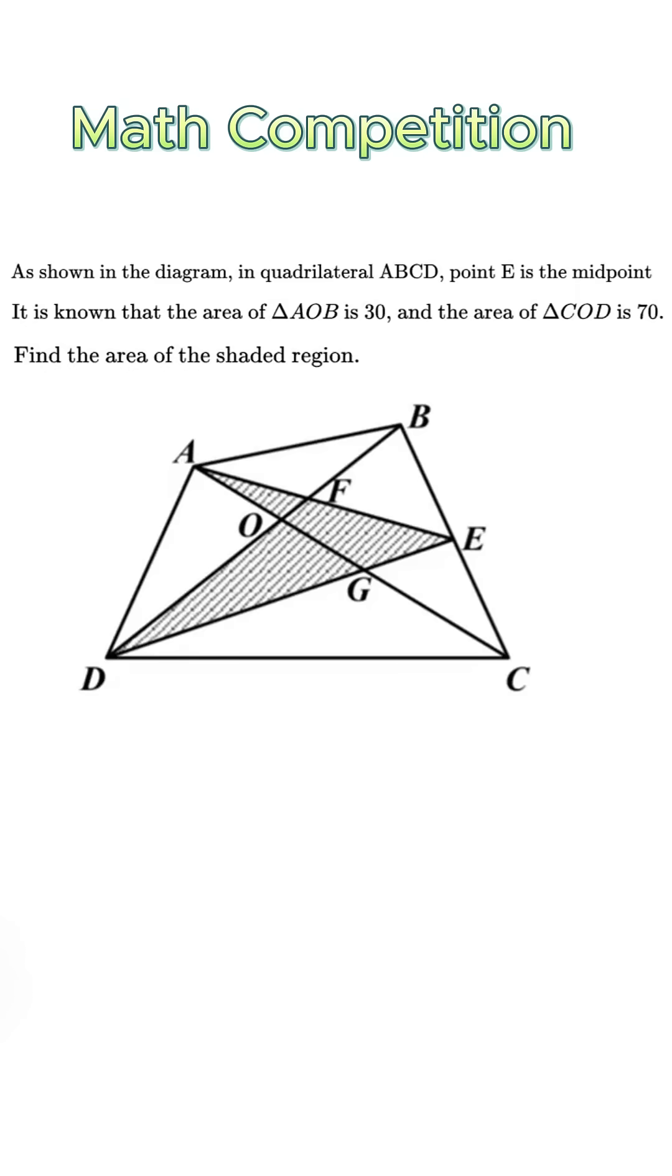In quadrilateral ABCD, point E is the midpoint of BC. Given the area of triangle AOB is 30 and the area of triangle COD is 70, find the area of the shaded region.